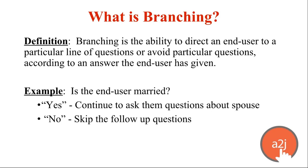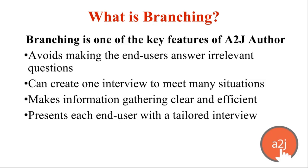For example: is the end user married? If yes, you take them to questions about their spouse. If no, they never have to be asked those questions, saving them time. If you think of a tree, a map, or a fork in the road, you can take somebody down different paths depending on what they need to get out of the interview. Branching is really one of the key features of A to J Author — that process mapping ability to help end users avoid irrelevant questions and create one interview that can handle multiple situations.